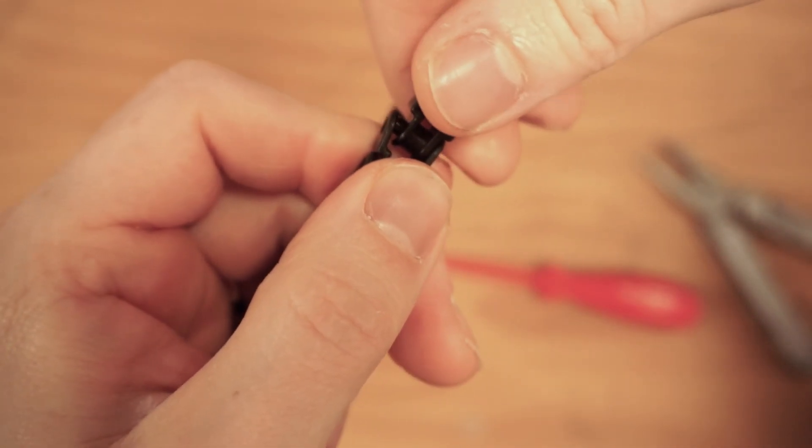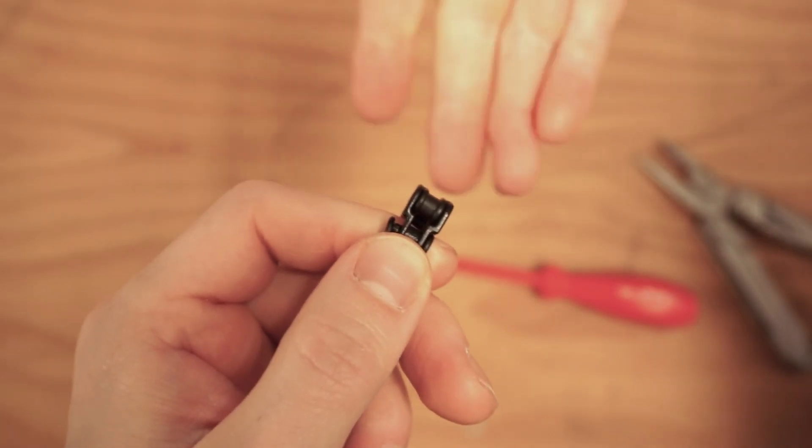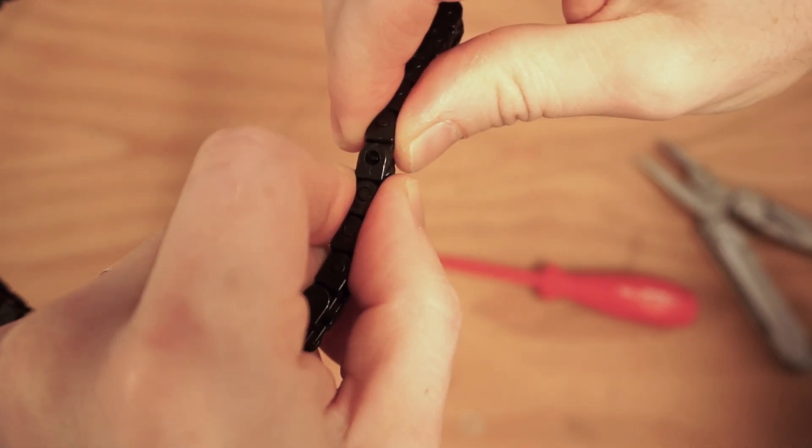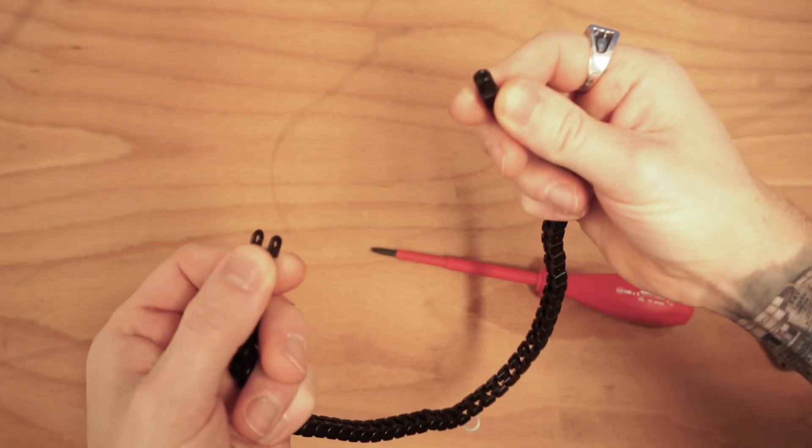And once you've got that one side off, now you can simply twist again. So I'm pulling this chain out, I'm twisting that chain and that breaks it off. Super easy.